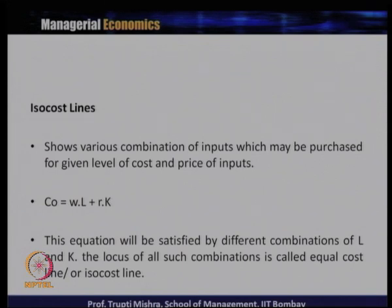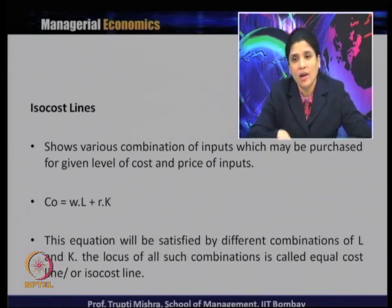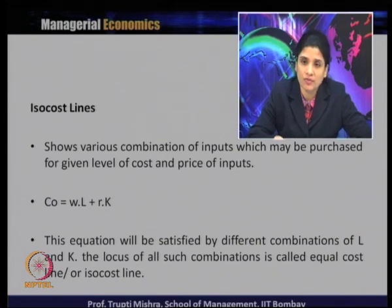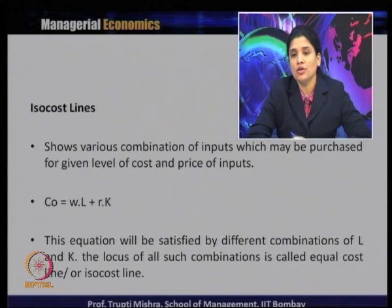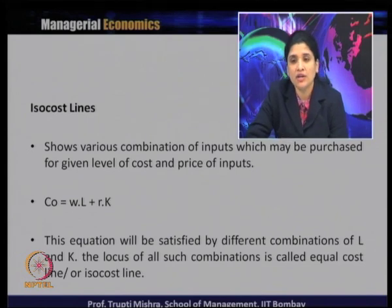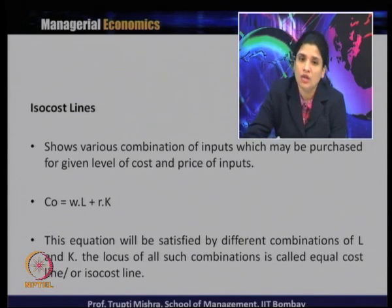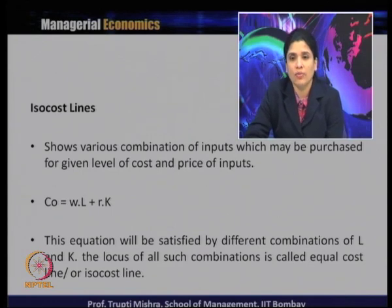Now we introduce the constraint. A producer can increase output by changing input levels, but the constraint is whether the firm can afford the inputs — there is always a budget limitation. That is why we introduce the concept of the iso cost line, which is the budget constraint for the firm and restricts them from using any unlimited level of inputs. The iso cost line shows the various combinations of inputs which may be purchased for a given level of cost and input prices.